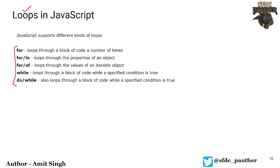The for loop is a very traditional loop where we iterate through an array or through an object. Then we have for-in, which is useful whenever we are iterating over objects. For-of is useful when working with arrays, objects, sets, or maps. While loop basically executes statements while a particular condition is true.